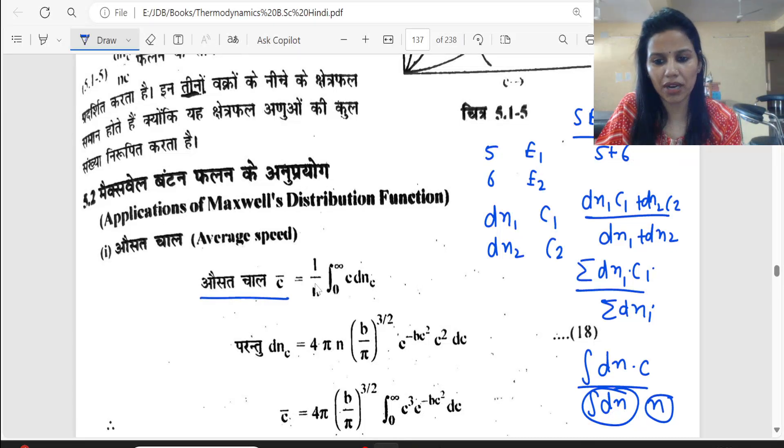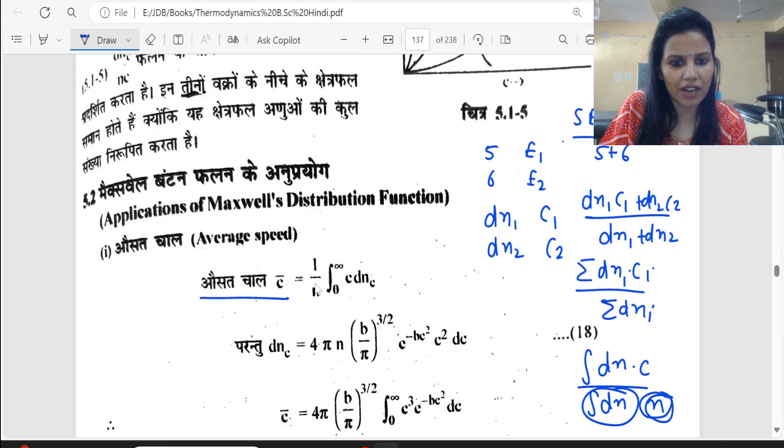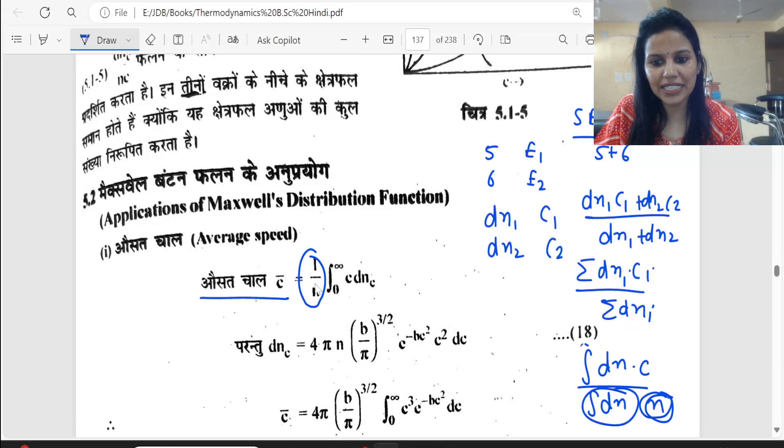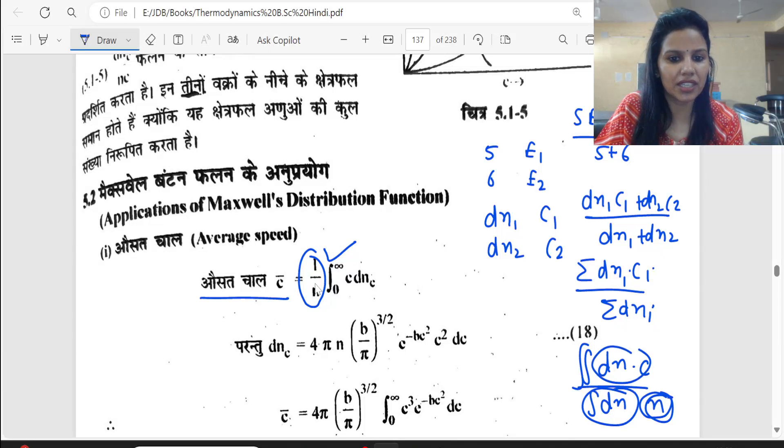The average speed is C bar. So what is N? This is 1 upon N. Then you have integration from 0 to infinity. And it is C multiplied by dN.